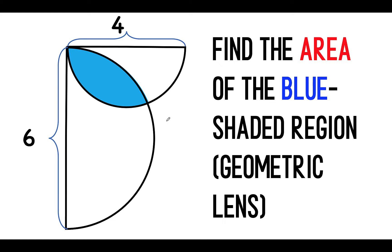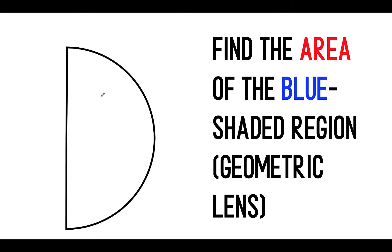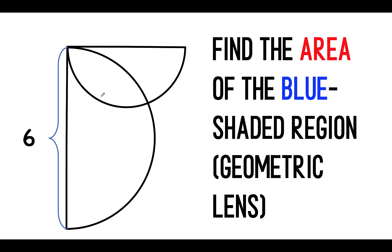Hi everyone, here's our math problem for today. Find the area of the blue shaded region as shown in this figure. Let's look at the basic components of this figure. We start with a semicircle with a diameter of 6 units and another semicircle with a diameter of 4 units. These two semicircles are perpendicular and then we shade their intersection. Now we would like to find what is the area of this geometric lens.